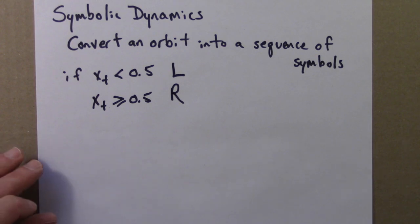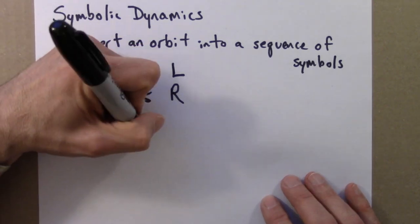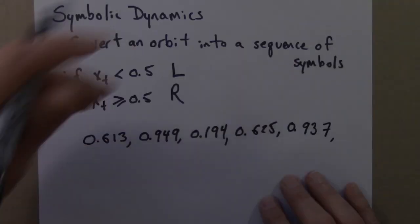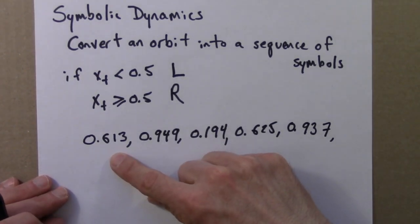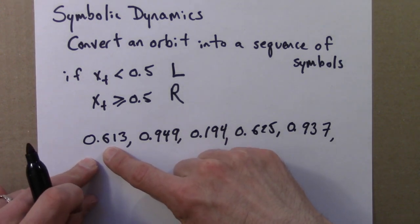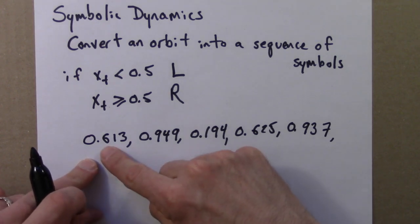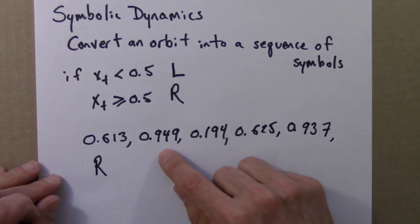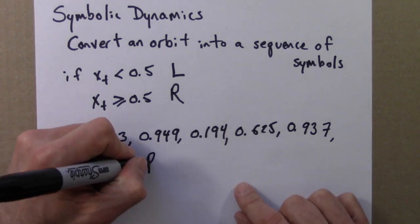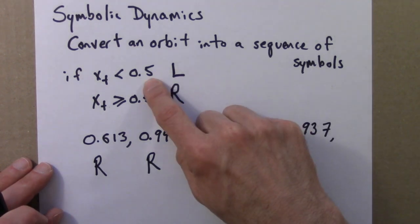For example, suppose we had the following itinerary. Here are the first couple of iterates for the logistic equation. Again, R equals 4 and the initial condition is 0.613. Let's convert these into symbolic dynamics. 0.613, that's greater than a half, that would be an R. 0.949, that's also greater than a half, that would be R. 0.194 is less than a half, less than 0.5, I'll call that L.